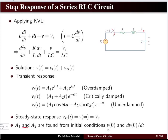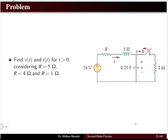The voltage equation has two unknown constants A1 and A2, determined from initial conditions: the voltage v(0) and the derivative dv/dt at t=0. The steady-state response is the final voltage equal to the supply voltage. Let us solve a problem on the series RLC network step response. We have a 24-volt source with resistor, inductor, and capacitor connected together — determine the voltage and current for time t greater than zero.